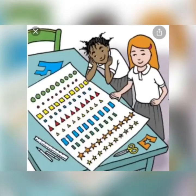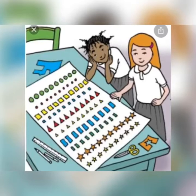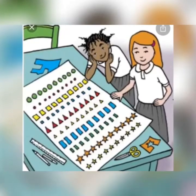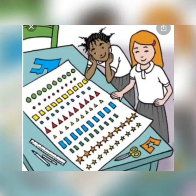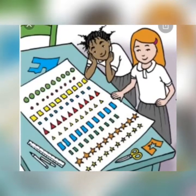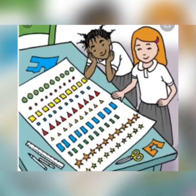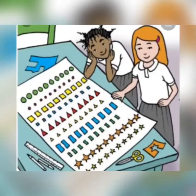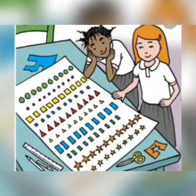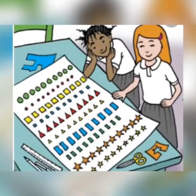There are a lot of shapes on this chart. Yes, there are. There are 10 big circles and 10 little circles. There are 10 big squares and 10 little squares. There are 10 big triangles and 10 little triangles. There are 10 big rectangles and 10 little rectangles. There are 10 big stars and 10 little stars.